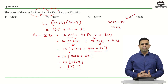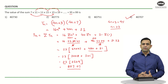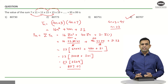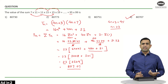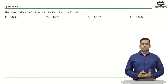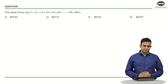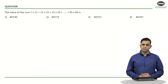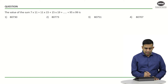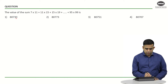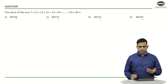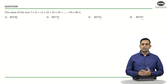Those not comfortable with calculations can use a calculator to arrive at the answer. Let's look at another way to solve this. Since the last digits of each option are different — 0, 3, 1, or 7 — we can use a pattern-based approach.